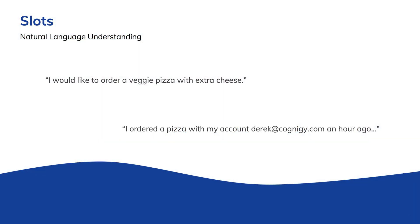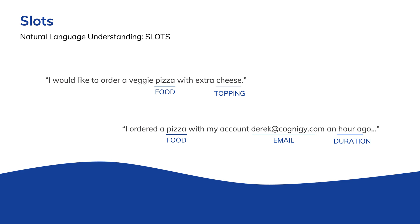Let's take slots first. Slots are categories of words that add meaning to a user utterance. For example, if a user says, "I would like to order a veggie pizza with extra cheese," or "I ordered a pizza with my account derek@cognigy.com an hour ago," Cognigy can identify that pizza is a food, cheese is a topping, derek@cognigy.com is an email, and an hour ago is a duration. Slots is a term of art in NLU discussion, but just think of it as a category. If I say pizza is a slot match for food, I mean that pizza is a match for the food category.